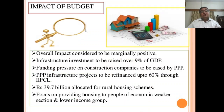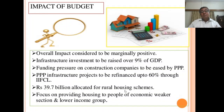Impact of budget: overall impact considered to be marginally positive. Infrastructure investment to be raised over nine percent of GDP. Funding pressure on construction companies to be eased by public-private partnership. PPP infrastructure projects to be refinanced up to 60 percent through IIFCL, and rupees 39.7 billion allocated for rural housing schemes. Focus on providing housing to people of economically weaker section and lower income group.